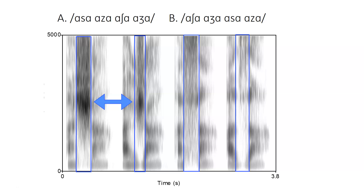We can also see a relatively continuous voice bar in the second and fourth productions, which are the voiced fricatives. The mid-frequency fricative noise in the first two productions shows us that we have the palatal fricatives first, followed by the alveolar fricatives second.